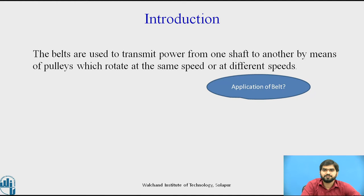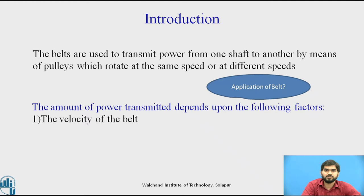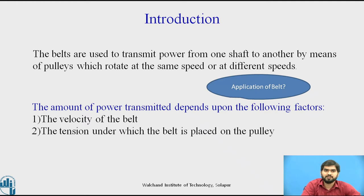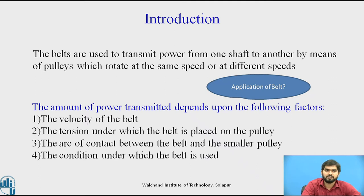What are the applications of the belt? The amount of power transmitted depends upon the following factors: first, velocity of the belt; second, the tension under which the belt is placed on the pulley; third, the arc of contact between belt and the smaller pulley — the arc of contact is the portion of the belt going to contact with the smaller pulley, and the angle made by that portion is nothing but the arc of contact; and fourth, the condition under which the belt is going to be used.